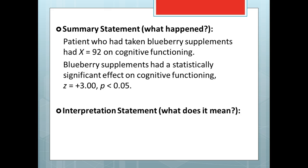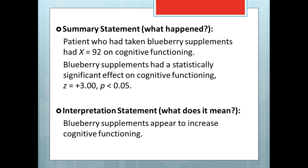Now second, the interpretation statement attempts to explain the results of the study in a more simplified way — in other words, it explains the results in a way that your grandma could understand. Let's reflect on our initial thoughts when rejecting the null hypothesis. We stated that something probably happened, and more specifically, it appears that blueberry supplements have an effect on cognitive functioning. Now let's get even more specific and ask: what kind of effect was it? The Z-score was a plus three, which indicated that cognitive functioning increased. That is our interpretation statement: Blueberry supplements appear to increase cognitive functioning. And that is how simple an interpretation statement is when you make the decision to reject the null hypothesis.